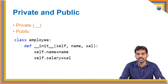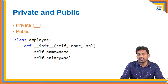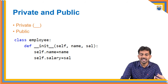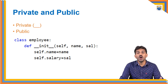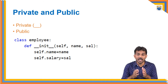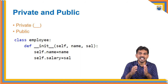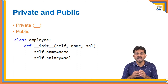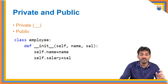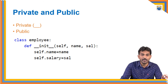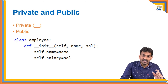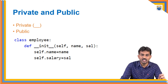Coming to private and public — in normal languages like C, if you declare a global variable, you can access it from anywhere without restriction. If you want to control a particular variable, you need access specifiers. In Java, there are four kinds of access specifiers: private, public, protected, and default. In C++, there are three: private, public, and protected. But in Python, you have two access specifiers: private and public.